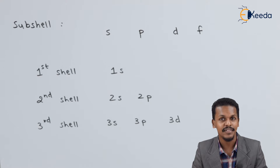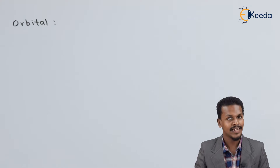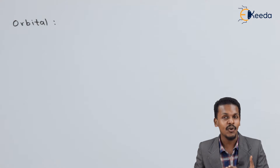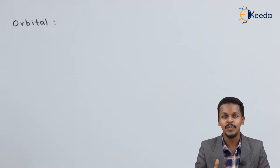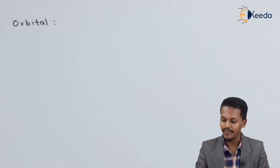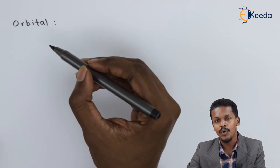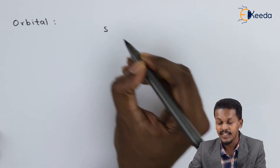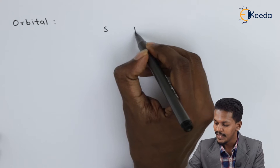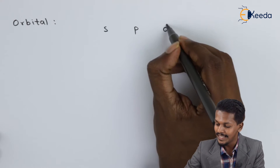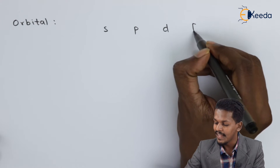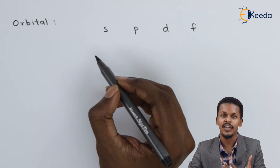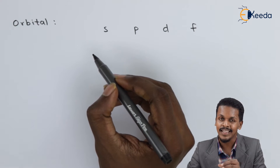Now let us talk about orbitals. A shell consists of sub-shells, and a sub-shell consists of orbitals. This can be explained with the help of the azimuthal quantum number. The first shell consists of only one sub-shell S; the second consists of S and P; the third of S, P, D; and the fourth of S, P, D, and F. These sub-shells also consist of orbitals, and orbitals are where we can predict the electrons present in them.